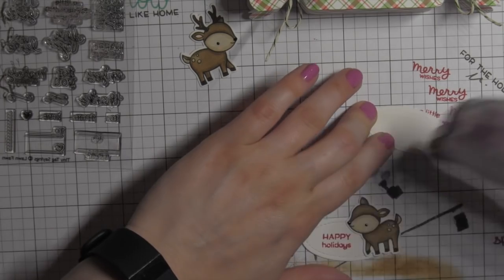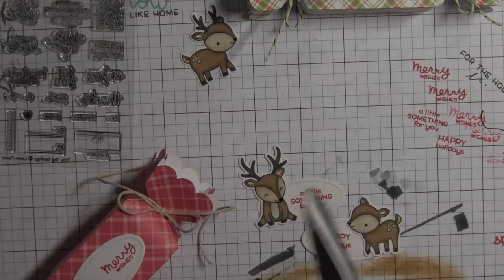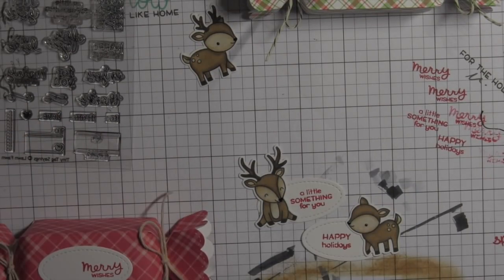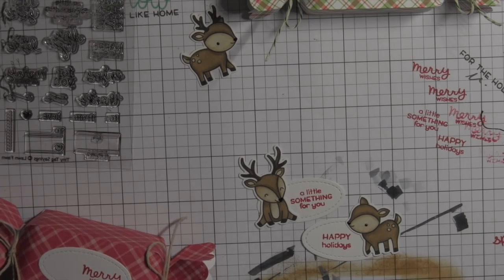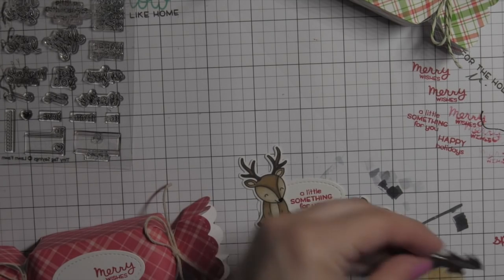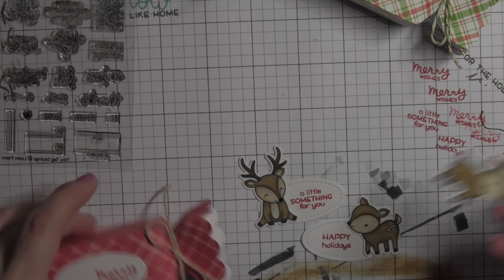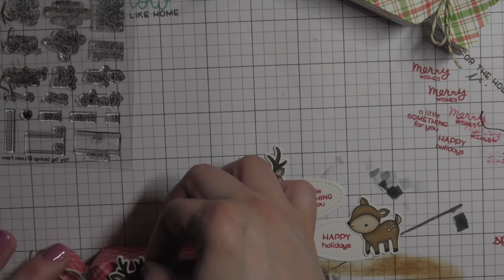I'm using a strong adhesive again to attach my pieces to the candy boxes. I don't want a chance that they're going to fall off. I like the Glue Glider Pro Permatac adhesive. I also will snip down the long ends on all of the candy boxes. That's going to kind of just neaten them up. Nice finishing touch so that they aren't too long or uneven.